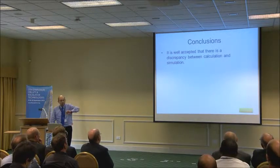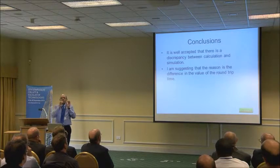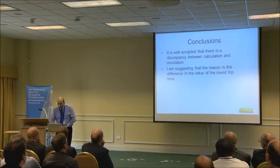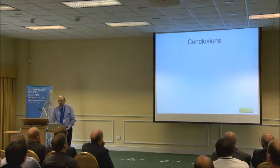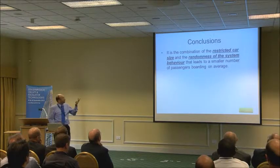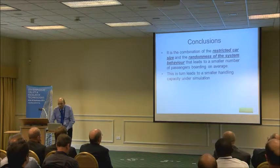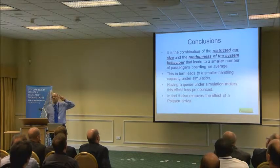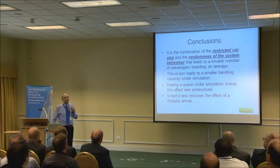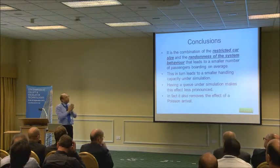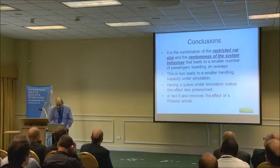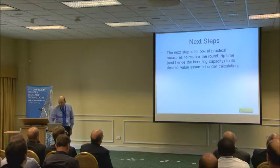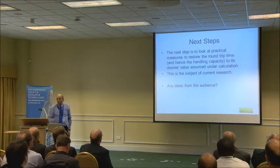It's well accepted that there's a discrepancy between calculation and simulation. What we're trying to do is look at the micro level to understand the reasons for it, because there will be practical implications. The value of the round trip time is smaller; with randomness of system behavior this leads to a smaller number of passengers and a loss of handling capacity. Having a queue under simulation makes this effect less pronounced — C1 (constant arrival) and C2 (Poisson arrival) both show that queuing decouples you from the arrival process, making it less important what arrival process is assumed. There's a loss of around 5–10% in handling capacity. The next step is practical measures to restore the round trip time and hence handling capacity to its desired value — this is the subject of current research.